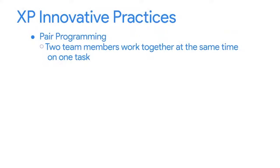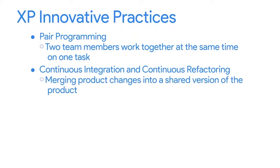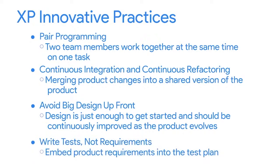XP features some other innovative practices used across many Agile teams. First, there's pair programming, when two team members work together at the same time on one task — usually in the same physical location, but can happen remotely too. Another practice is continuous integration and continuous refactoring — merging product changes into a shared version several times a day to get quick feedback on the quality of the code or product. Then there's avoid big design up front, meaning the design should be just enough to get started and should be continuously improved as the product evolves. And finally, there's write tests, not requirements — instead of writing a product requirements document and then later writing a test plan, your test plan serves two purposes: telling the team what to build and comparing what they built to what was supposed to be built.